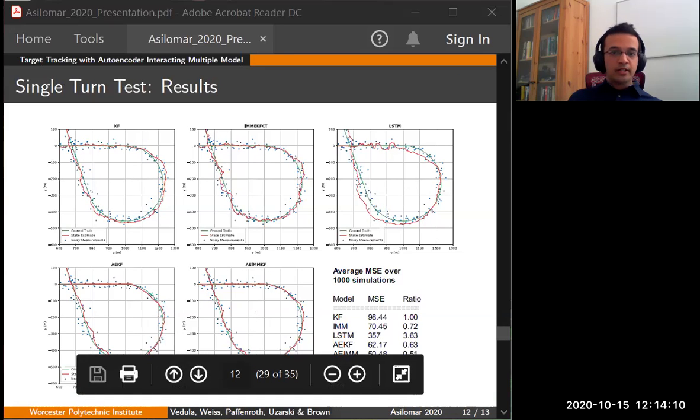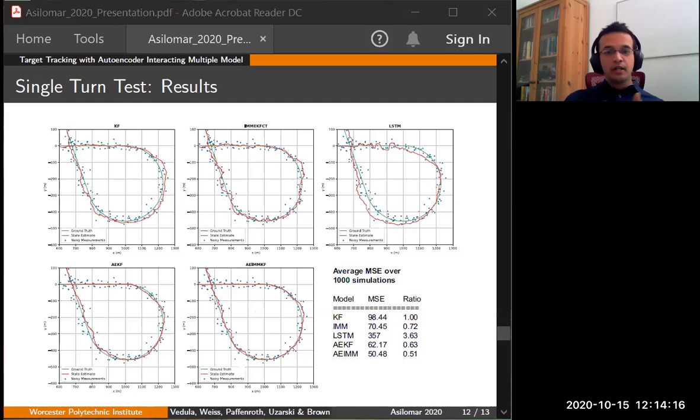The plots shown here are for a single simulation. Each model's state estimation is then compared with the actual ground truth and the corresponding MSE is reported. Note that the ground truth is used only for model evaluation. It does not affect each model's state estimate in any way. IMM shows better performance than KF, which is not surprising because IMM is an evolved model and contains a bank of KFs. However, both of these models show improvement when combined with a neural network. That is, hybrid models perform better. We can see that against KF, we have AEIMM and AEKF performing better. We can also see that the position MSE for these hybrid models is much smoother than the traditional models or the pure ML models.